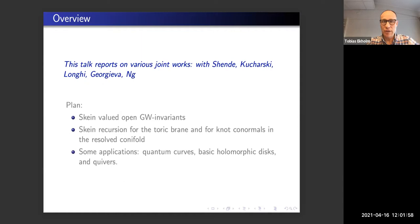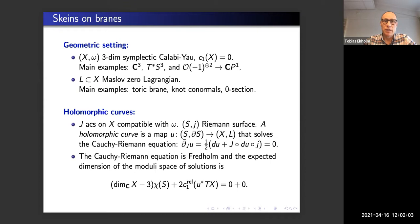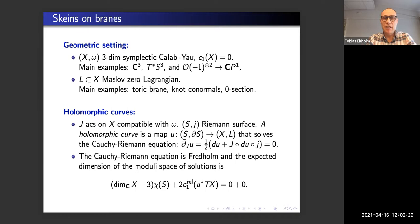Let me give you the geometric setting. We're going to work in a three-dimensional symplectic Calabi-Yau. These are not very strange manifolds — it's complex three-space, the cotangent bundle of S³, and the resolved conifold. Inside this space we have a Maslov-zero Lagrangian. The main examples are well-known: the toric brane in the conifold, knot co-normals, and also the zero section in T*S³. So there are no exotic Lagrangians.